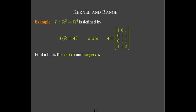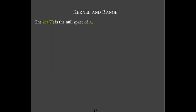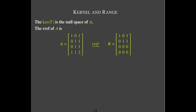Let's look at a couple of examples. Our first example is a transformation where the input space is R3, the output space is R4, defined by multiplication by a matrix. It has three columns because the input space is R3, and four rows because the output space is R4. We're asked to find a basis for the kernel of T and the range of T.